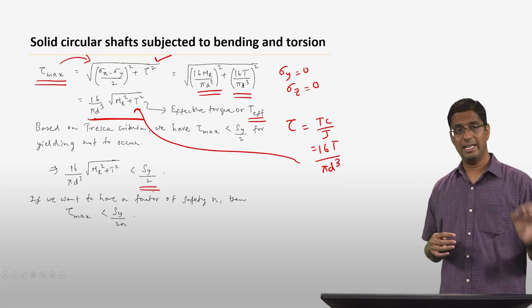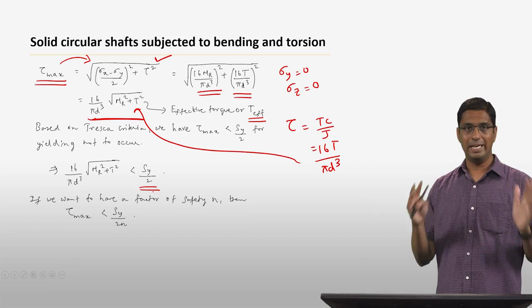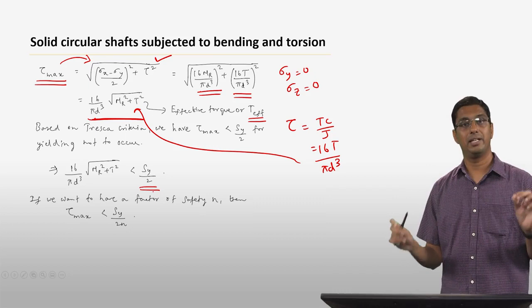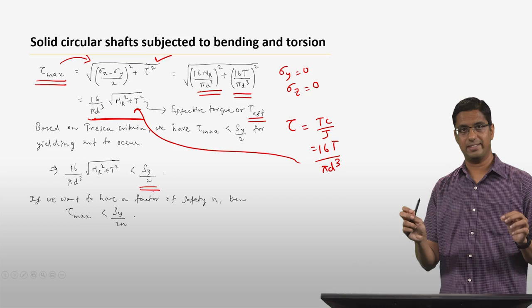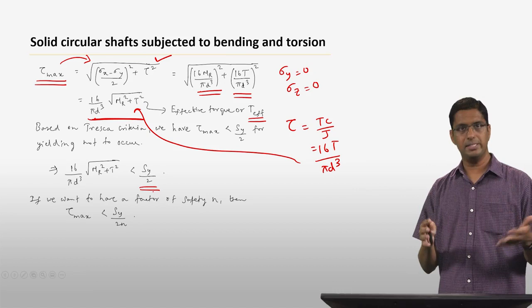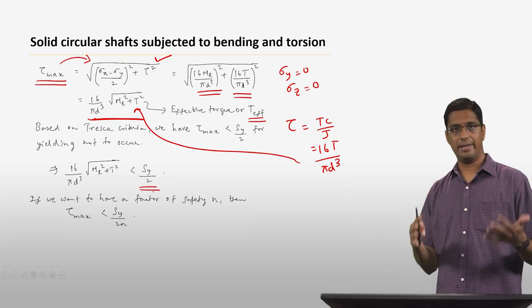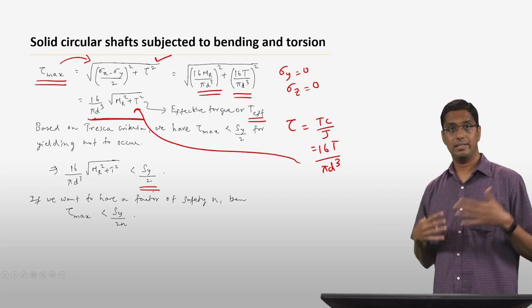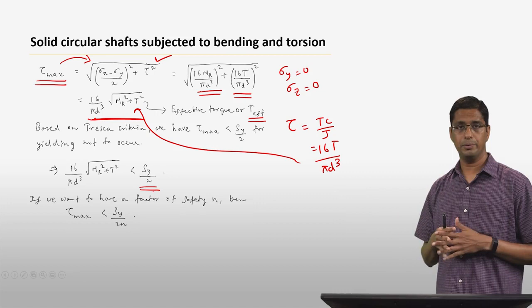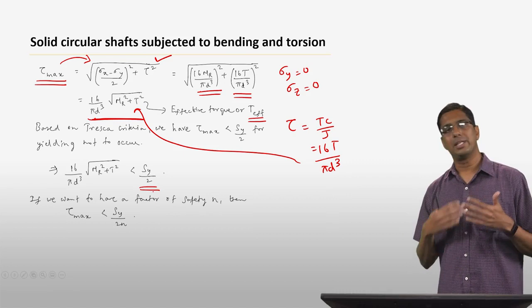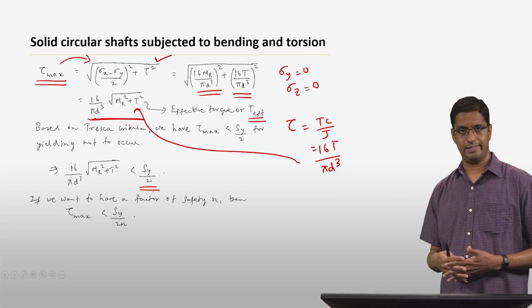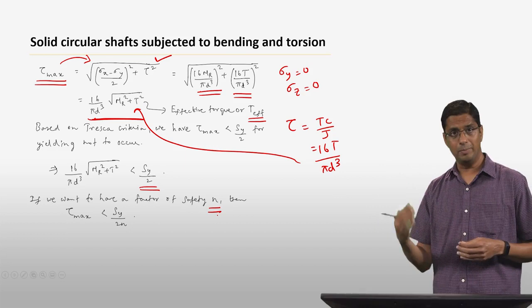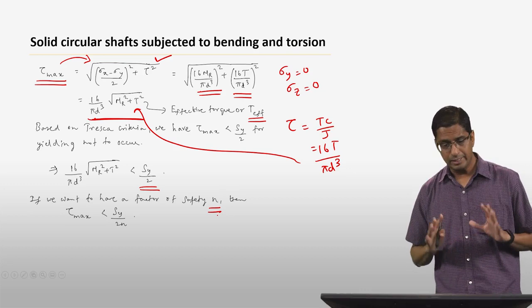To summarize the Tresca approach: we look at the two points in the cross-section where bending stress is maximum, find τ_max at those points, and ensure τ_max < S_y/2 for the shaft not to yield. If you require a factor of safety n, then τ_max must be less than S_y/(2n). That is how you analyze solid circular shafts subjected to bending and torsion using the Tresca criterion.